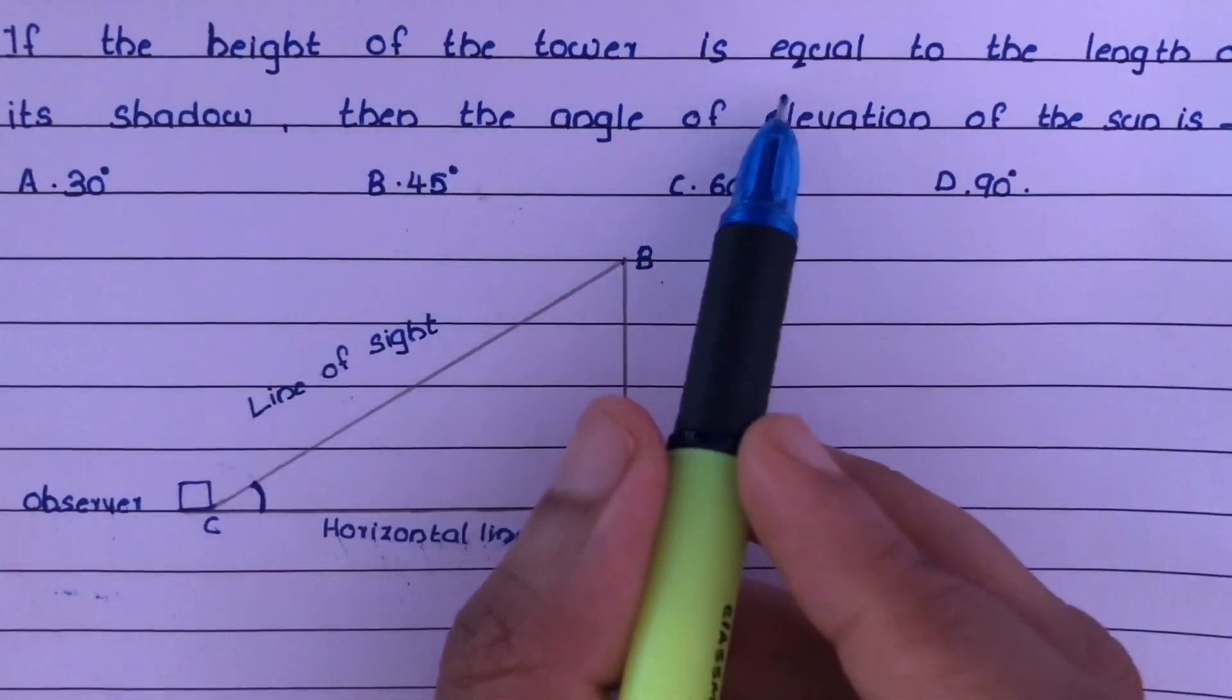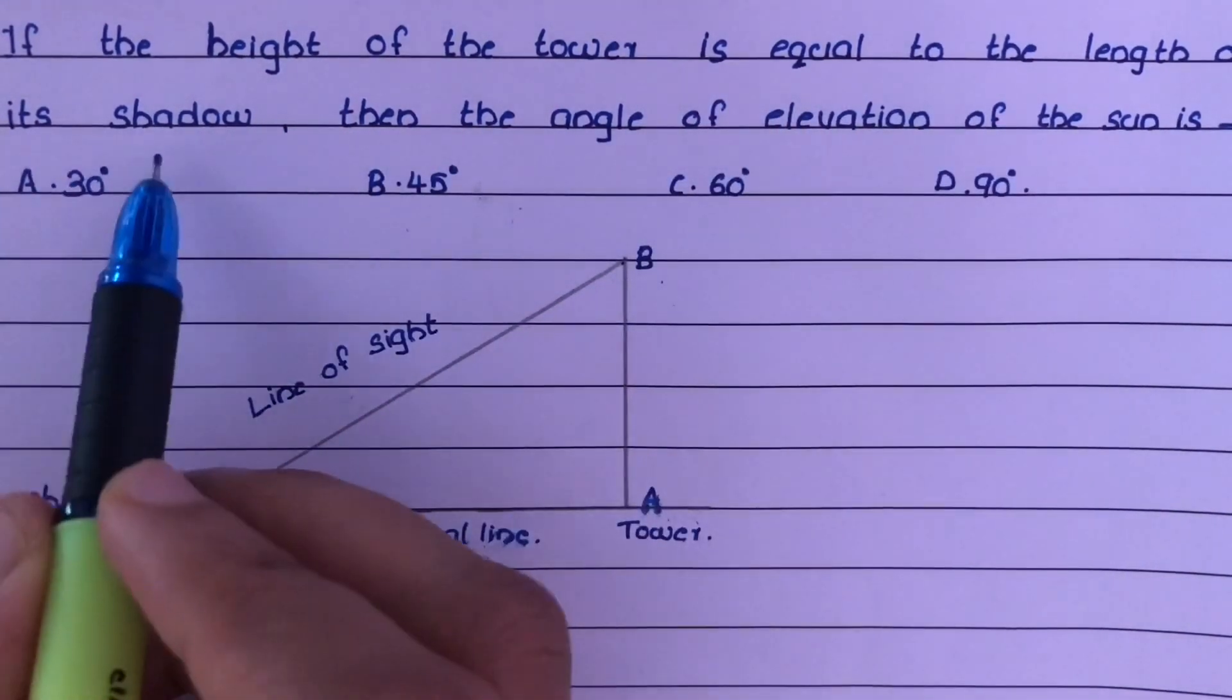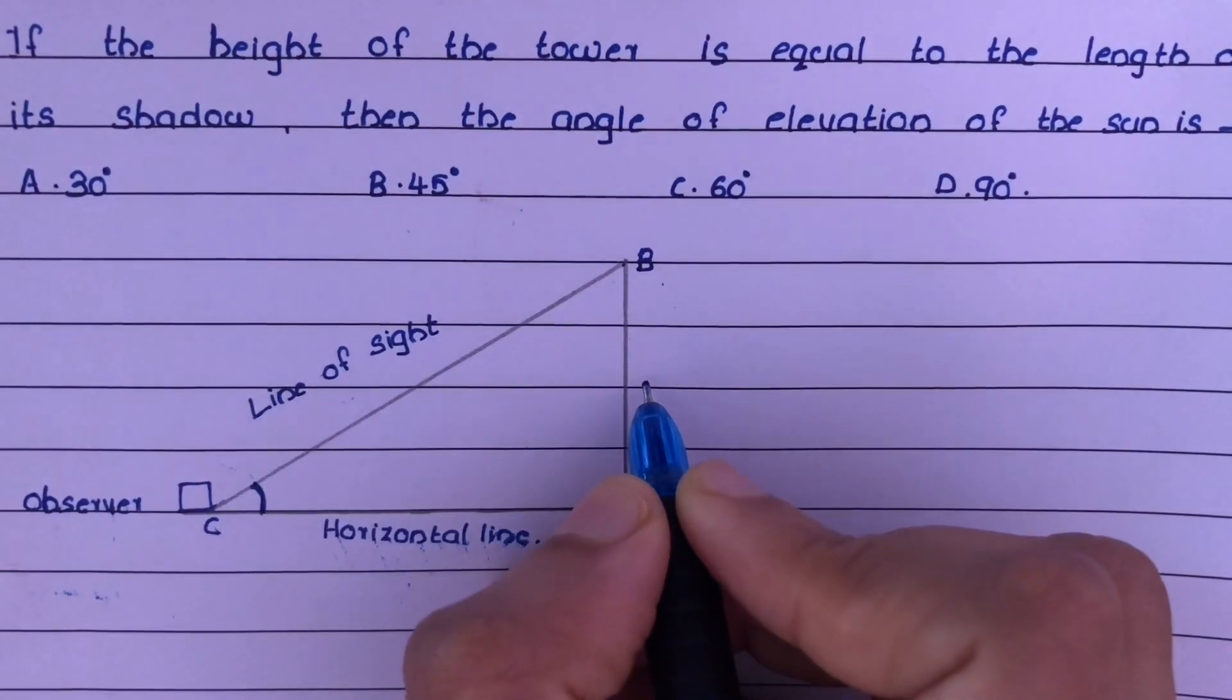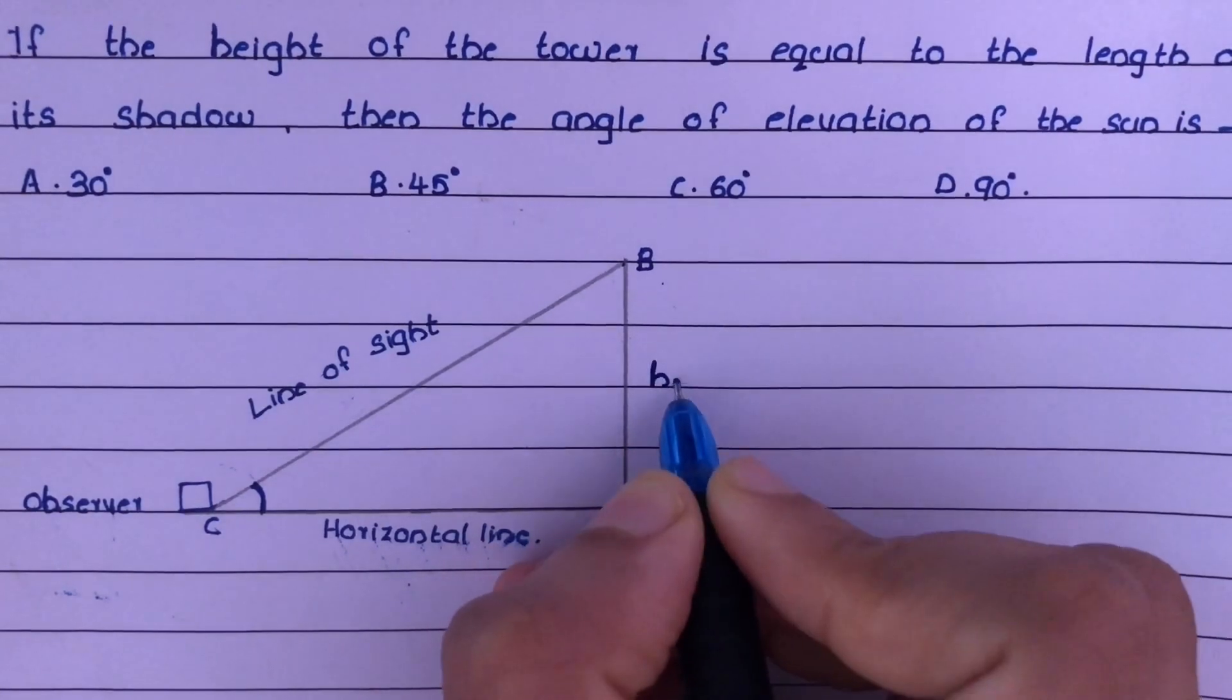Now, it is given that the height of the tower is equal to the length of its shadow. Here the tower is AB. So let us assume its height is H meters.